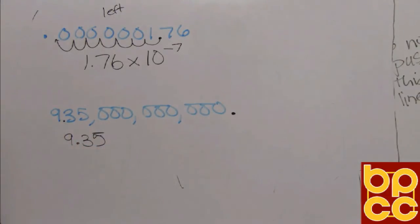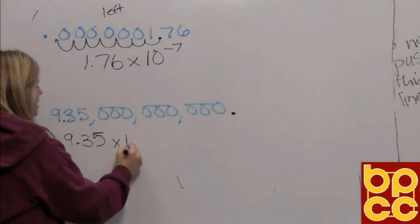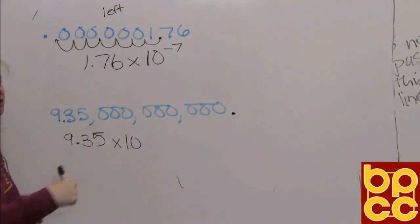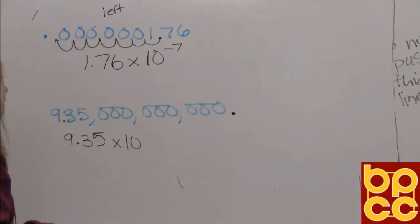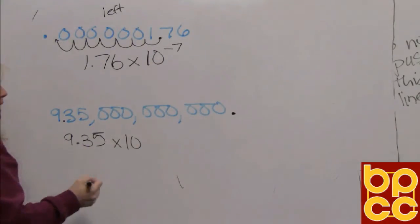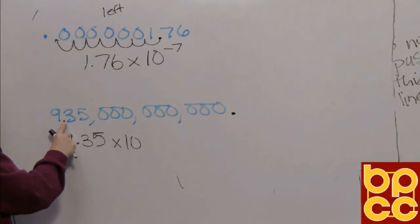Then we write times ten, because we move along our number system—every movement is a power of ten. Now to figure out what the exponent is, we count. Here's where we put the decimal point, this is where it ended.